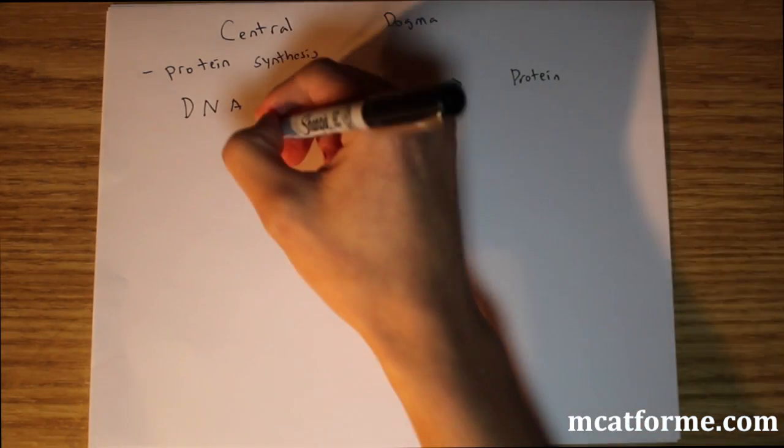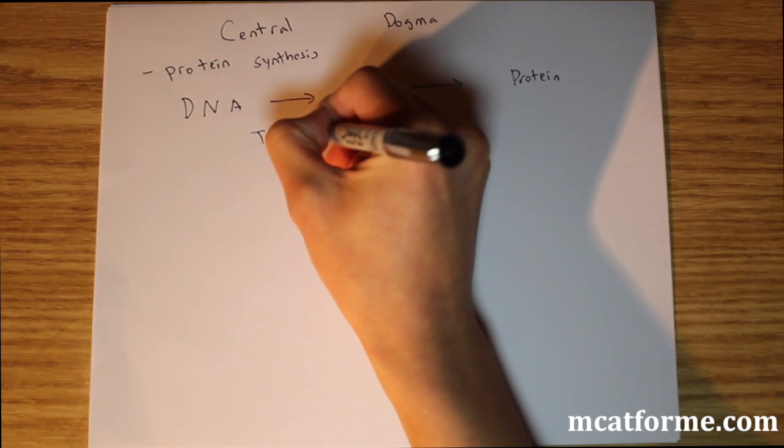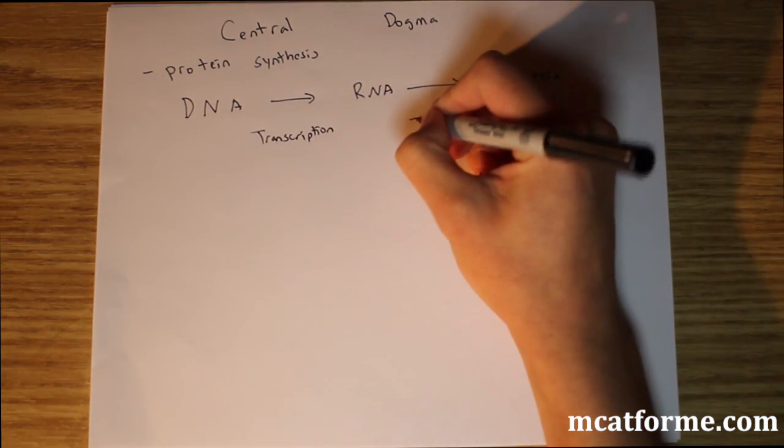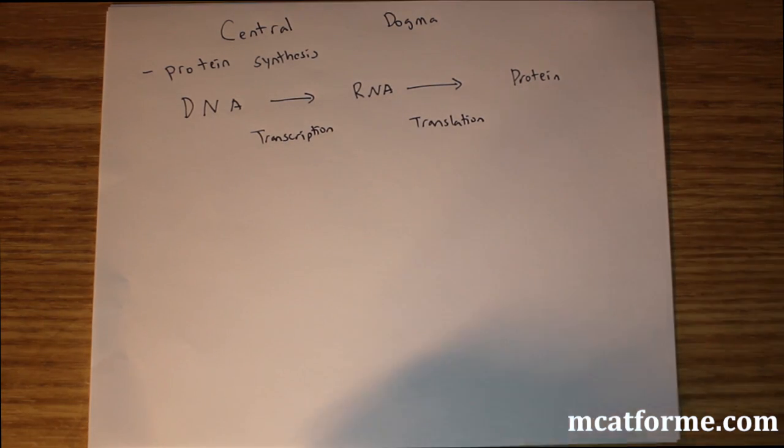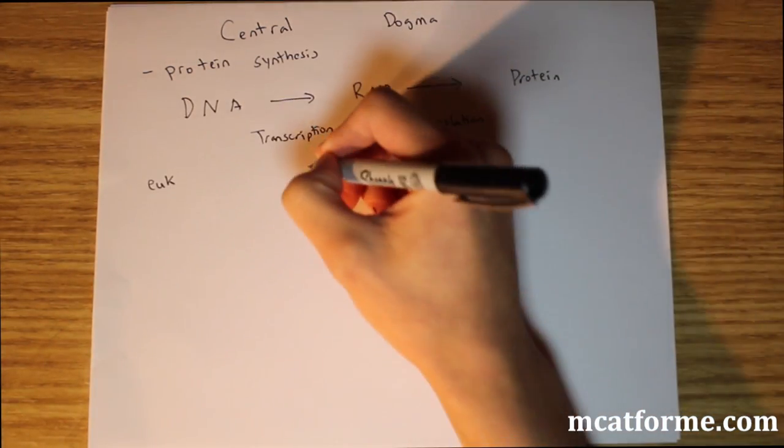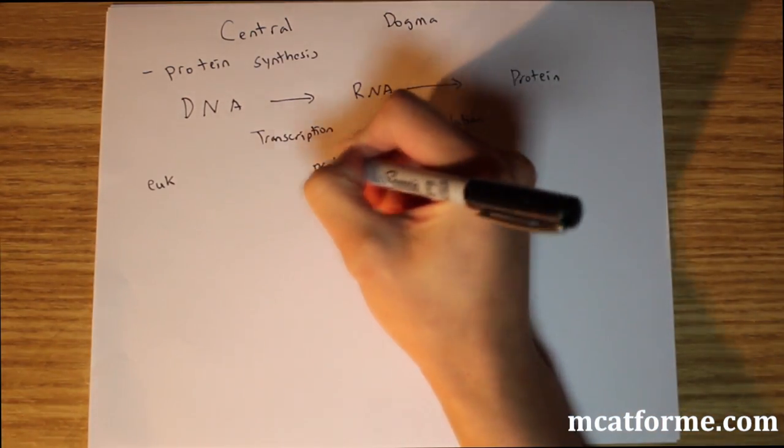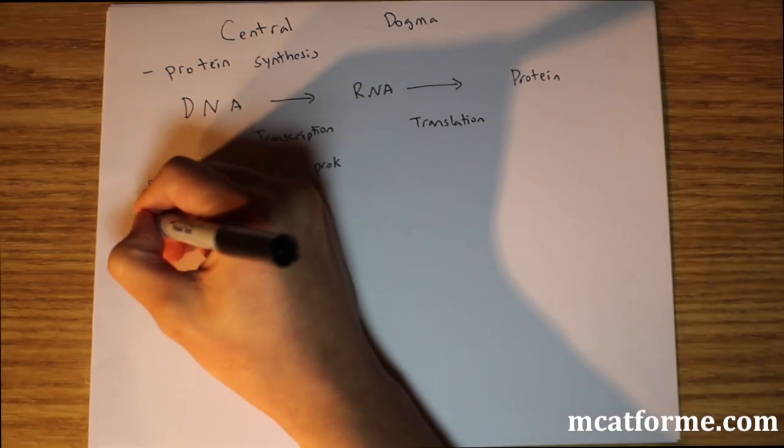So from DNA to RNA, that's called transcription. And from RNA to protein, it's called translation. So transcription is DNA and specifically to mRNA, messenger RNA. We're going to see the important thing is where does it occur. So in eukaryotes versus prokaryotes, where does it occur? It's going to occur in the same place that DNA is located in, and that would be in the nucleus.